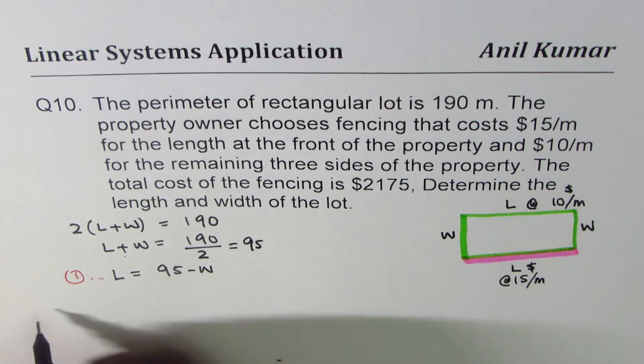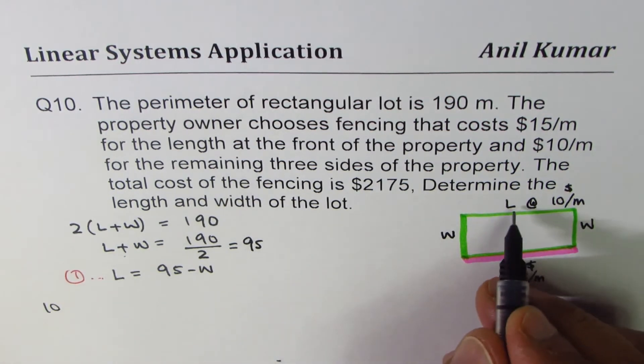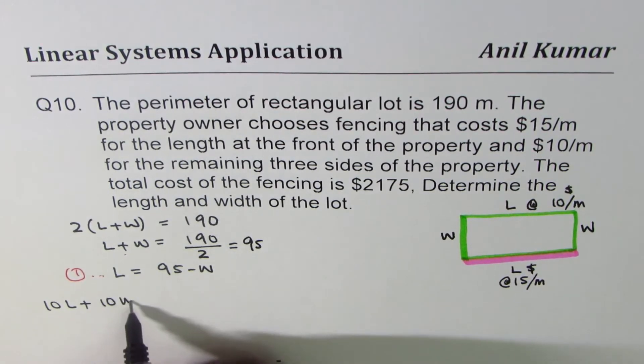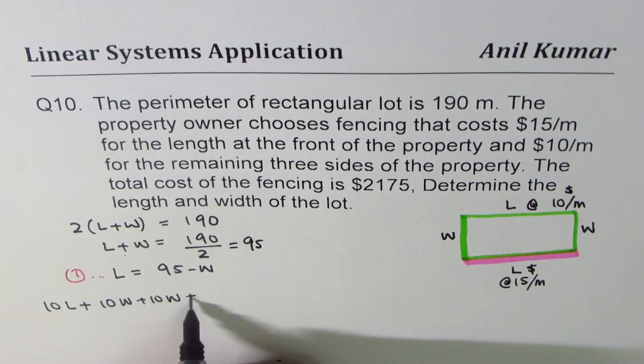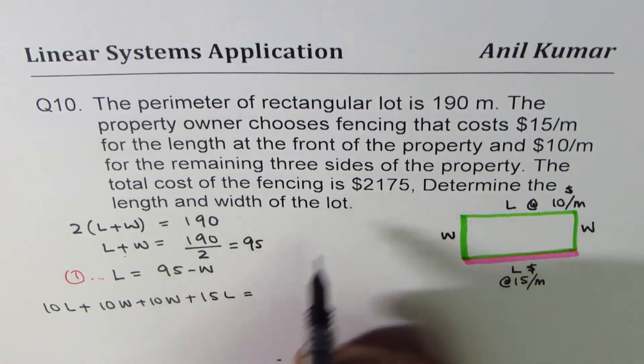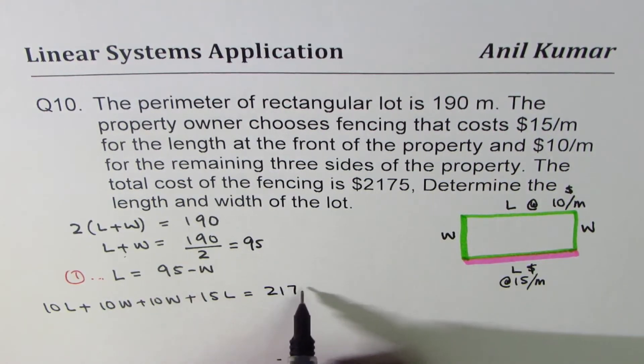we can write 10 times L plus 10 times W plus 10 times W plus 15 times L equals to total cost 2175. Does it make sense to you?